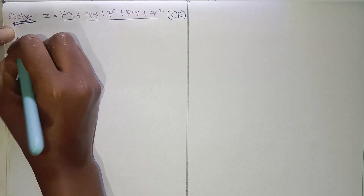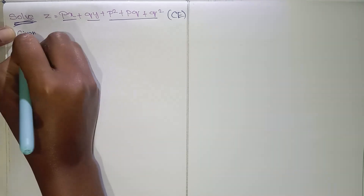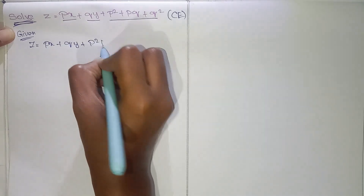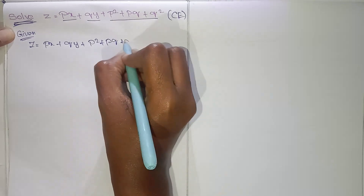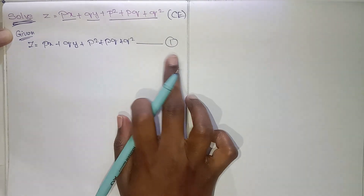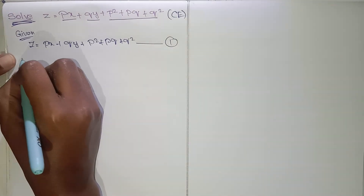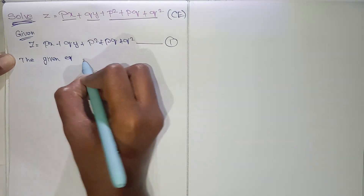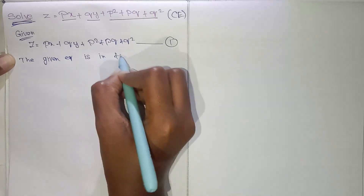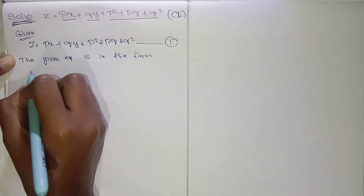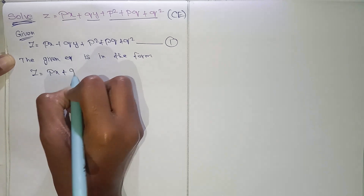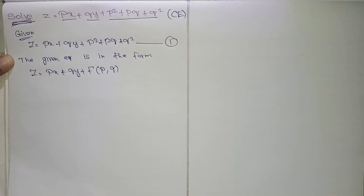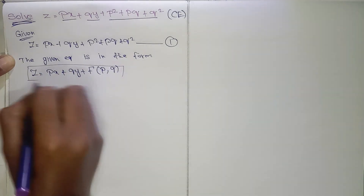First, we need to write down the given equation: Z is equal to Px plus Qy plus P squared plus PQ plus Q squared. We take this as equation number one. The given question is in the form of Z equals Px plus Qy plus f(P, Q).